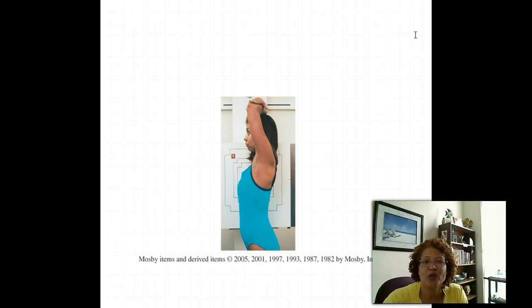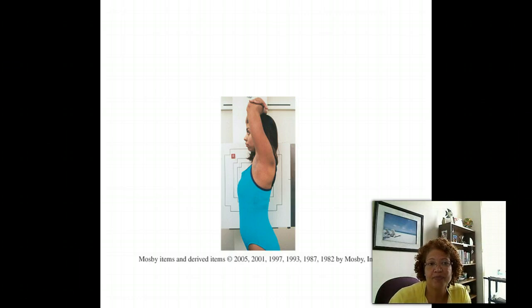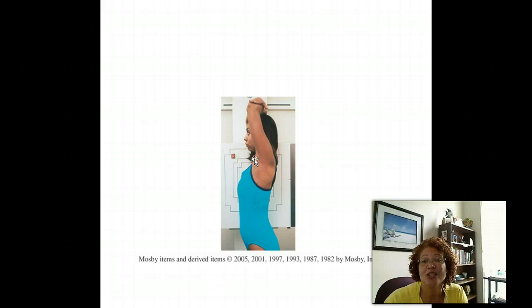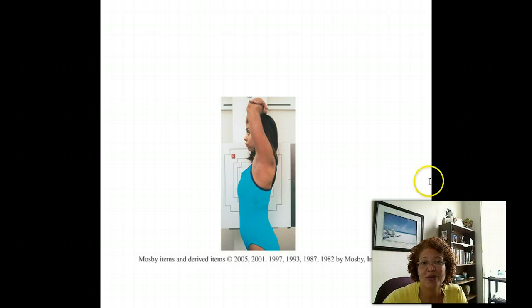The first position we're going to talk about is the lateral. The lateral refers to one of the patient's sides being closer to the image receptor than the other. This can apply whether the patient is lying on the table or at the upright wall bucky. In this image here, the patient's right side is closer to the image receptor, therefore this is a right lateral x-ray. This is also confirmed by a right marker placed on the image receptor, which will appear on the finished image indicating it was a right lateral x-ray.